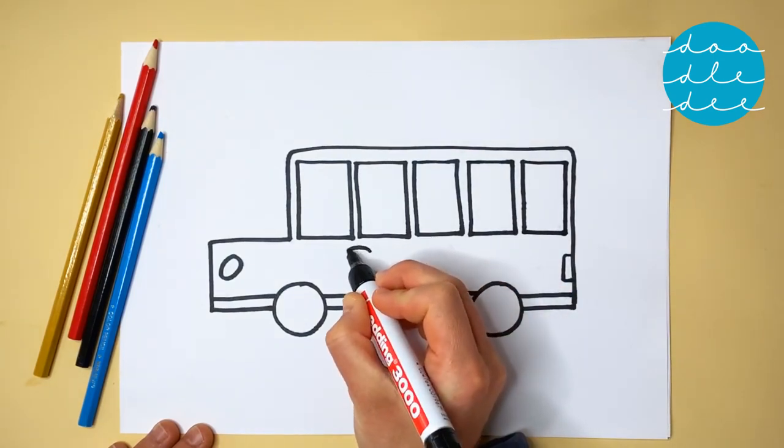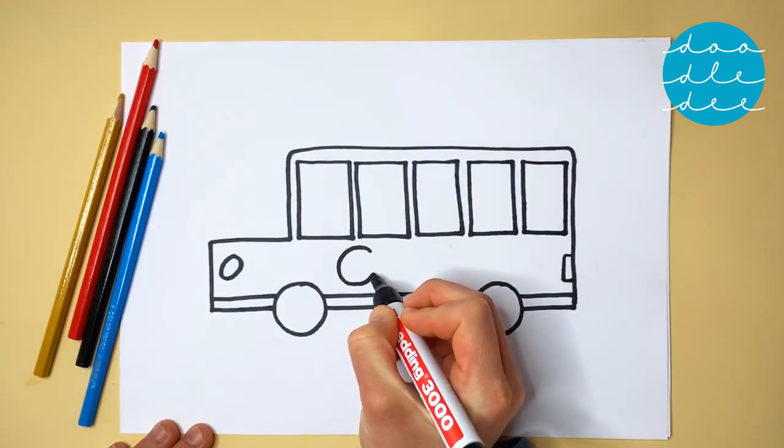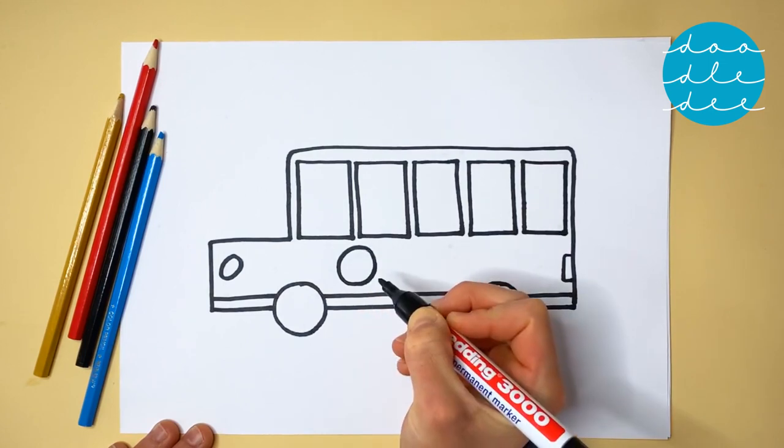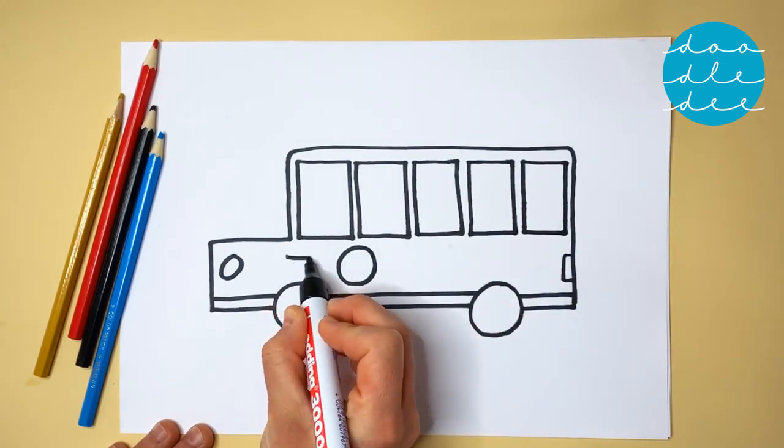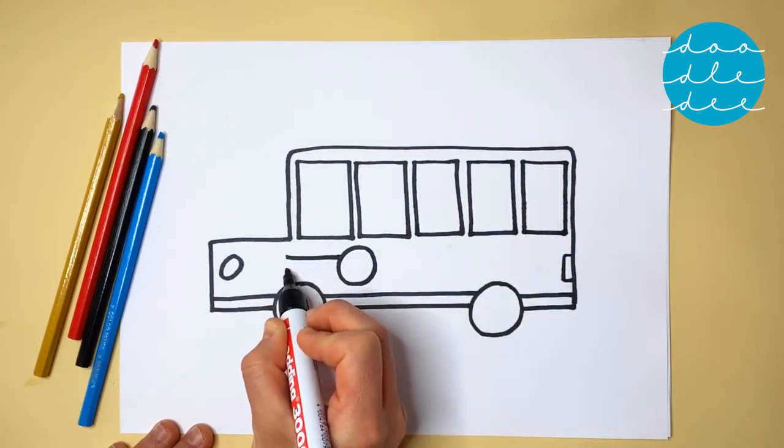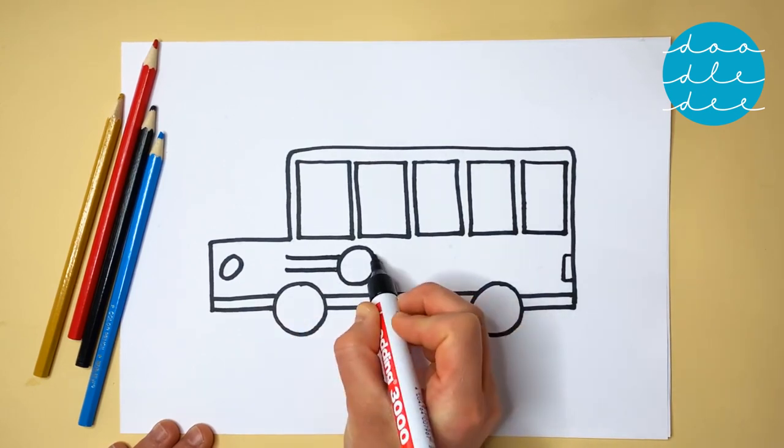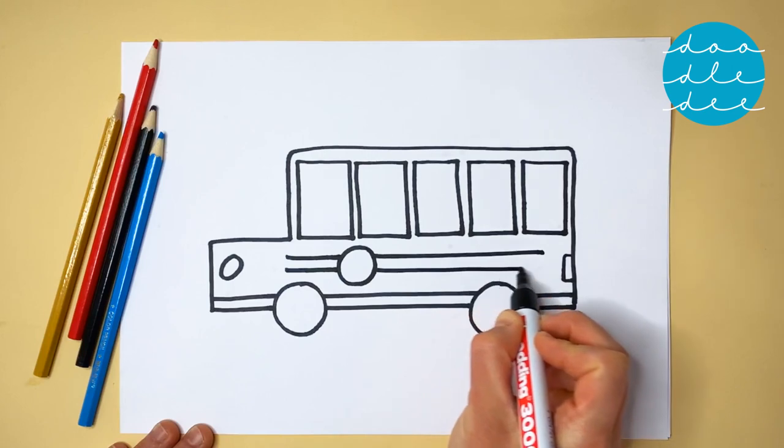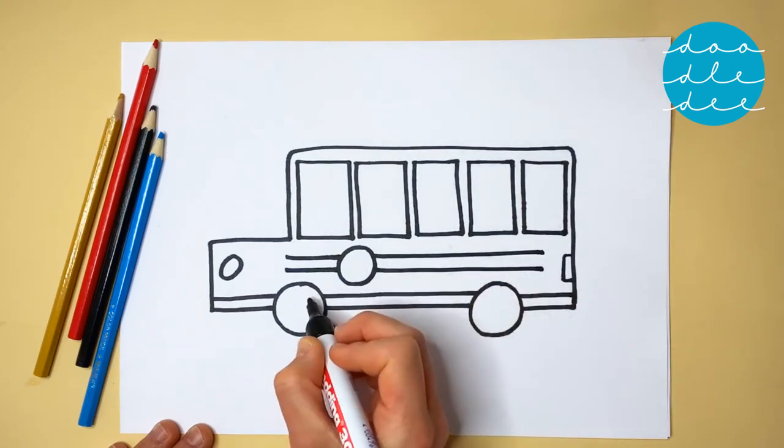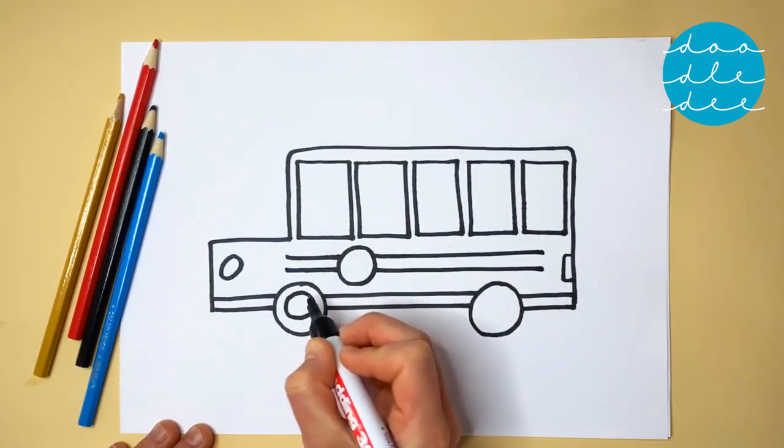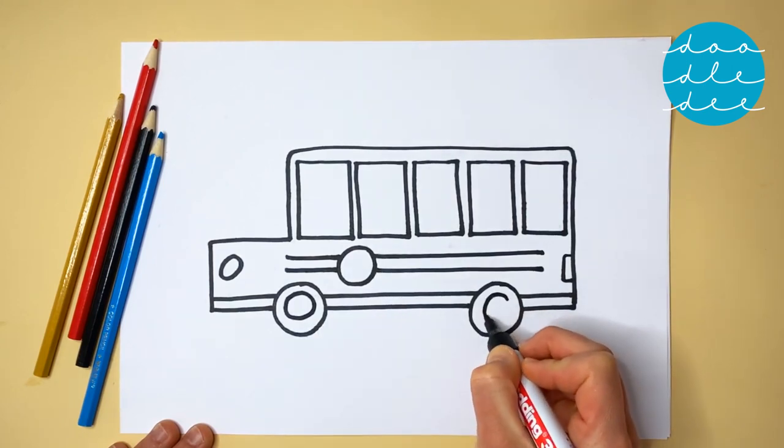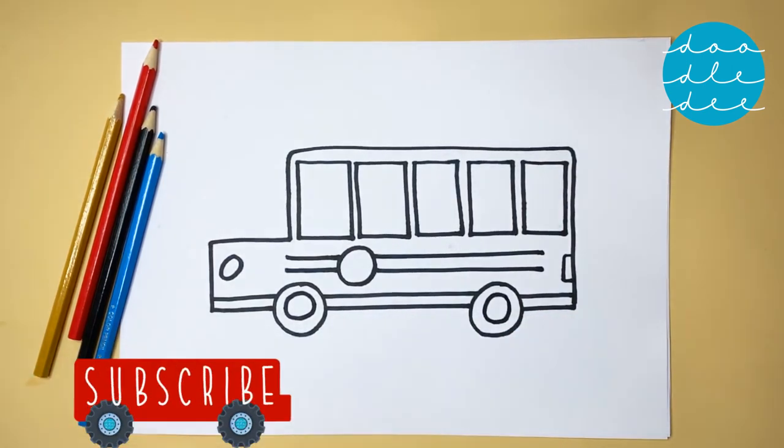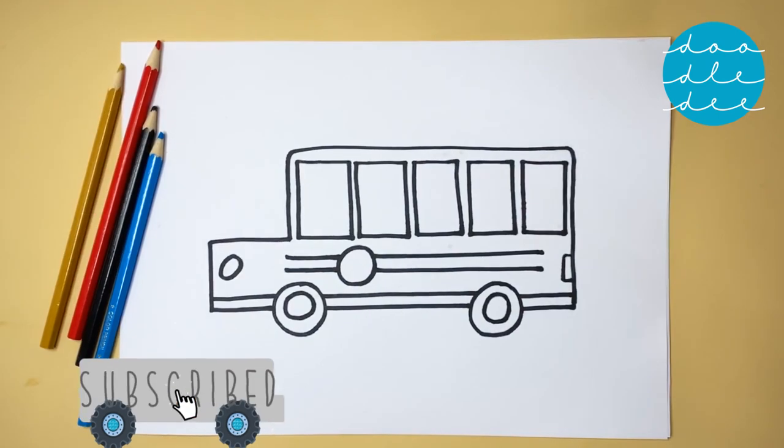Draw a circle on the side of the bus, with long straight lines running through it. Add two more circles, one inside each wheel. Be sure to stick around until the end to see what our school bus can do.